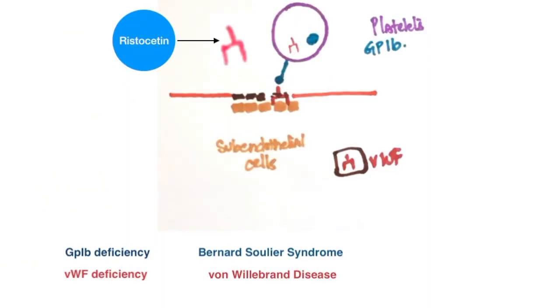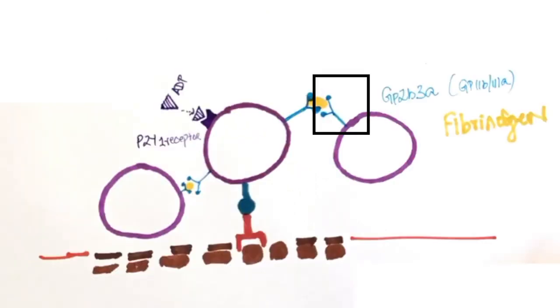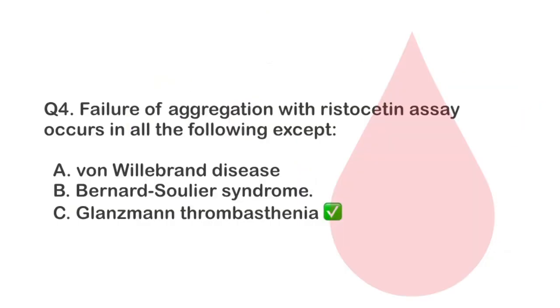A defect in von Willebrand factor is seen in von Willebrand disease and a defect in GP1B is seen in Bernard-Soulier syndrome. Glanzmann thrombasthenia has a deficiency in GP2B3A which isn't related to Ristocetin. Hence, aggregation with Ristocetin would not be affected in Glanzmann thrombasthenia.